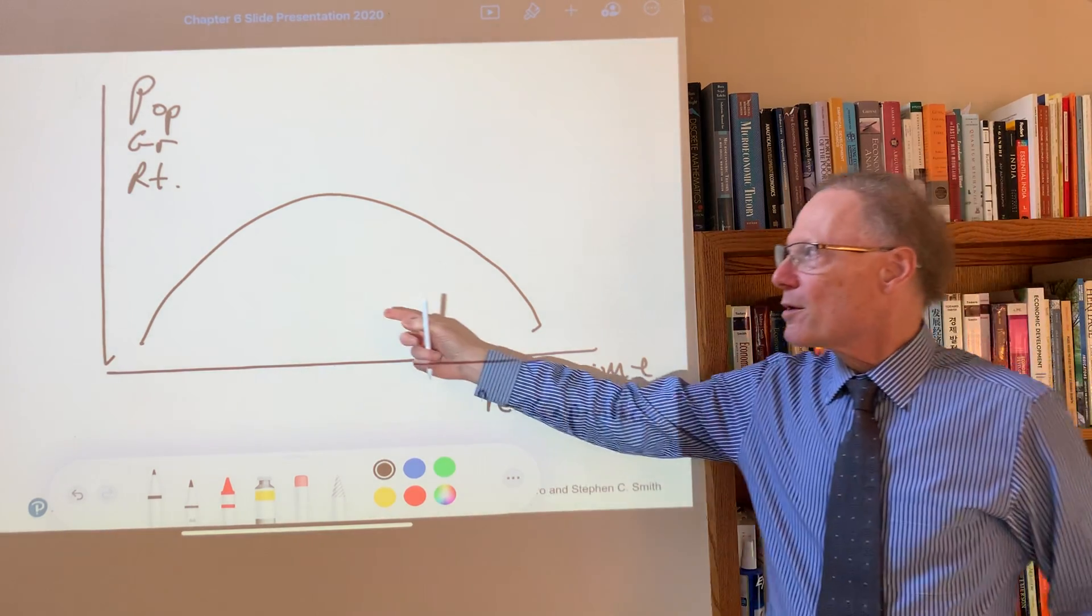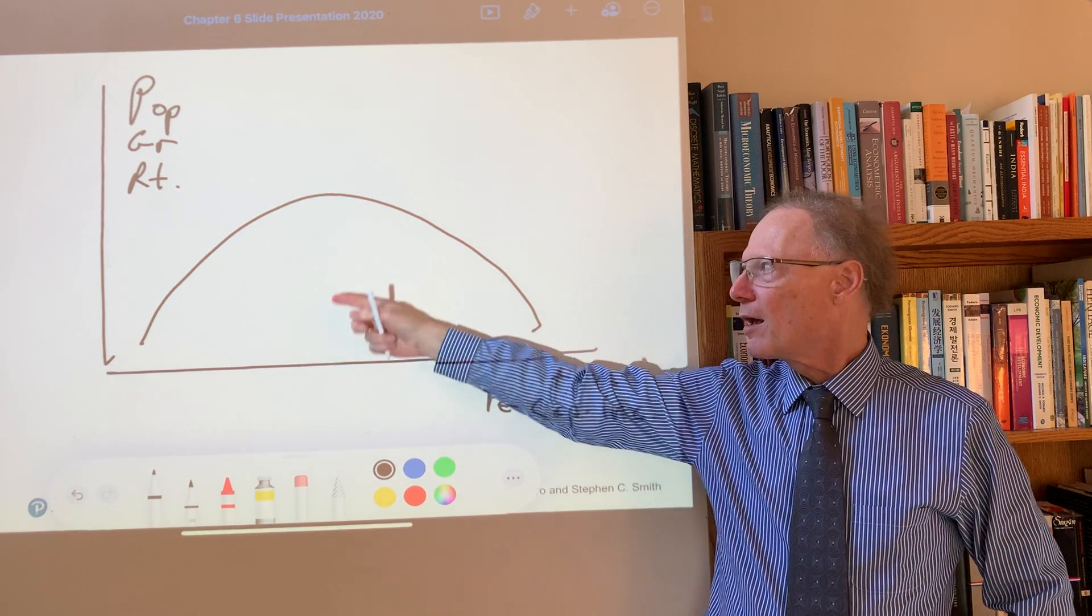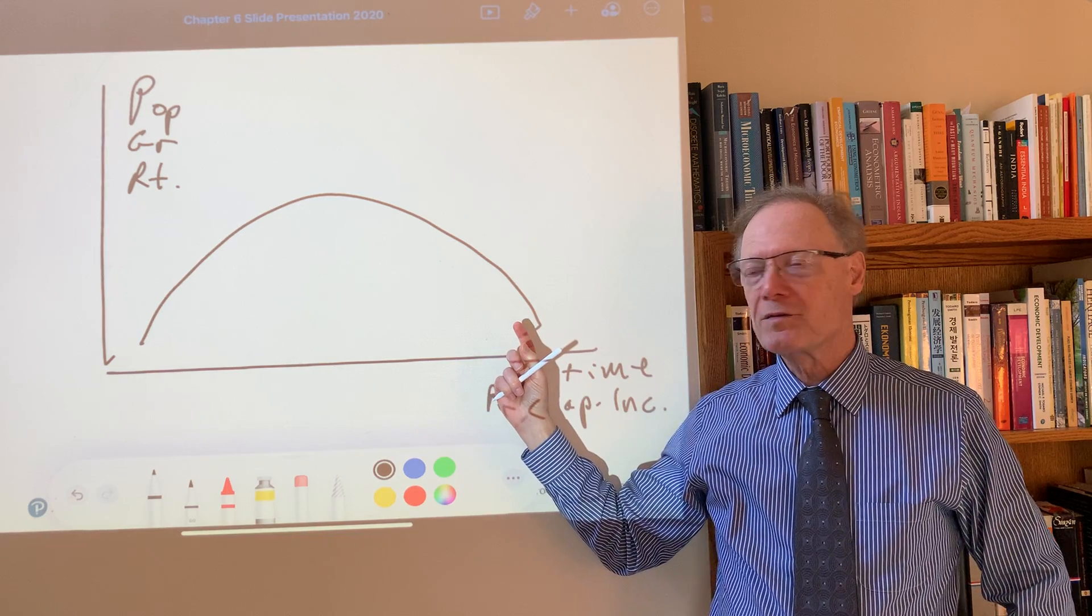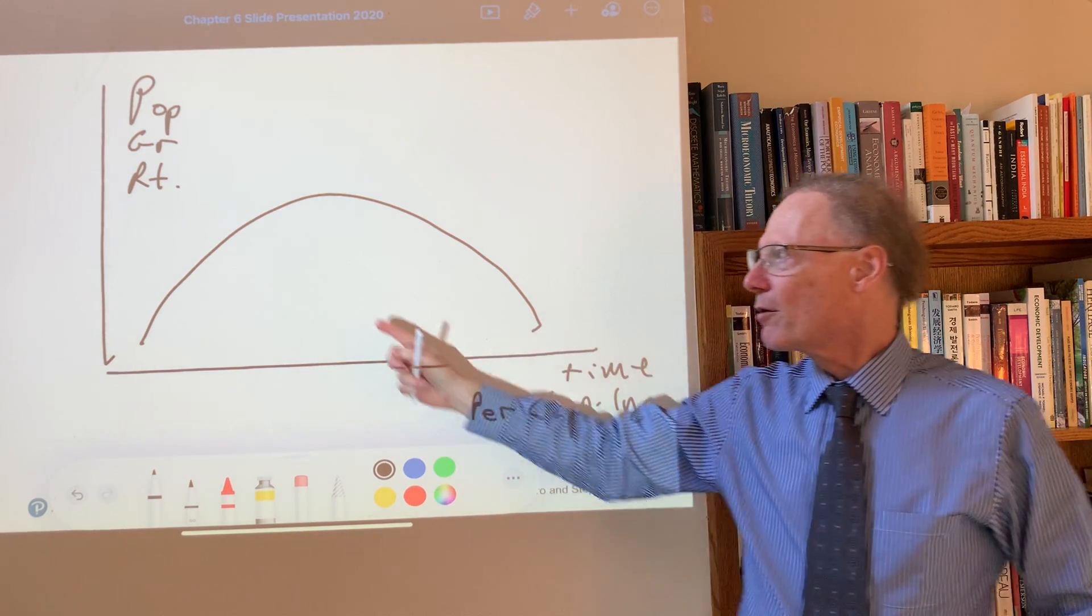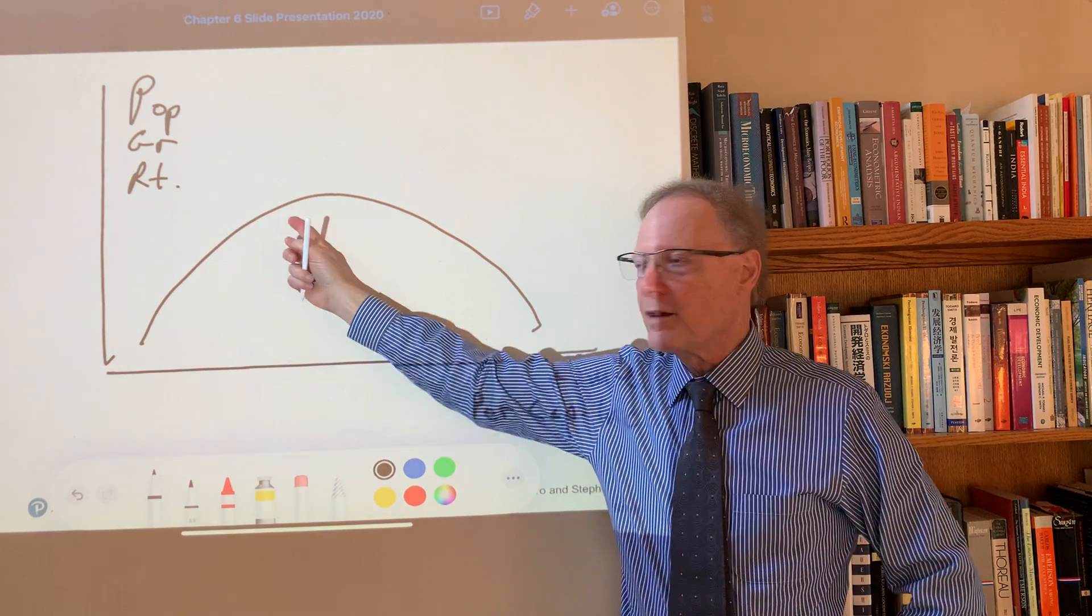Now think about the population growth rate as showing a pattern like this one. We're going to really first focus on this part of the inverted U.